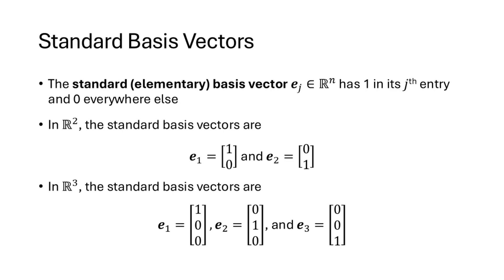We're going to start by talking about something called standard basis vectors. The standard basis vector e sub j has a 1 in the j-th entry and 0 everywhere else. In R2 we have two of these standard vectors: e1 and e2. e1 is the vector (1,0) and e2 is the vector (0,1).